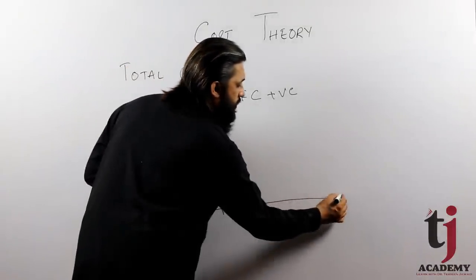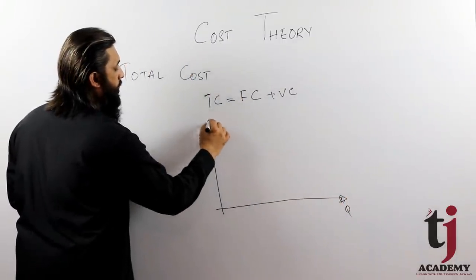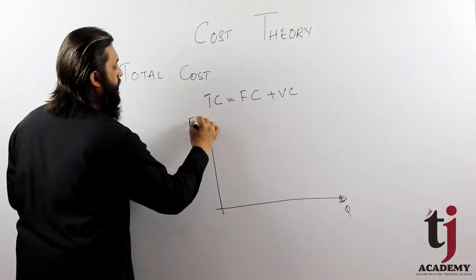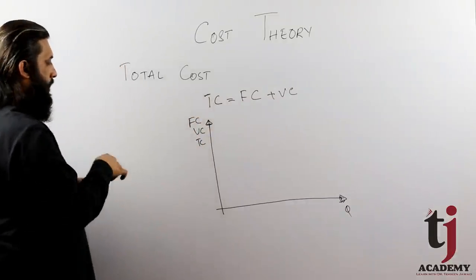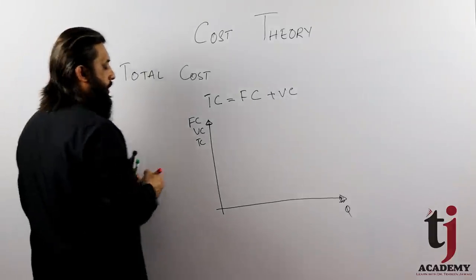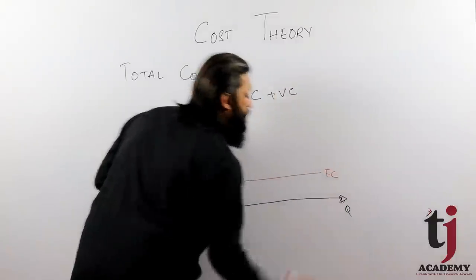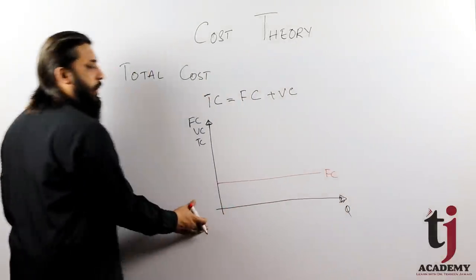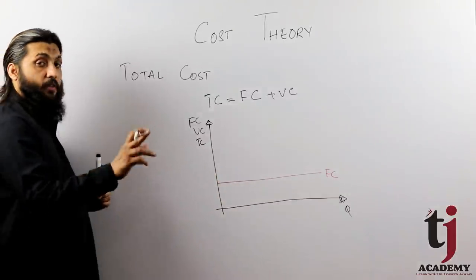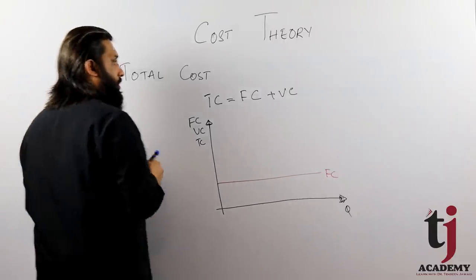Here we have output, and here we have fixed cost, variable cost, and total cost drawn. You have fixed cost here, which is independent of output. Whether you produce or not, this cost you have to pay. Then we have variable cost.